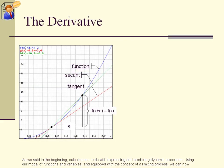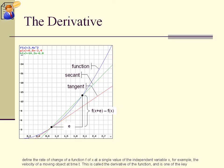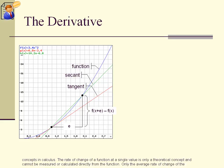As we said in the beginning, calculus has to do with expressing and predicting dynamic processes. Using our model of functions and variables, and equipped with the concept of a limiting process, we can now define the rate of change of a function f of x at a single value of the independent variable x, for example, the velocity of a moving object at time t. This is called the derivative of the function, and is one of the key concepts in calculus.